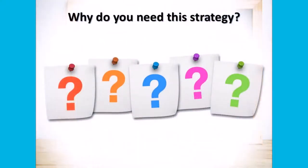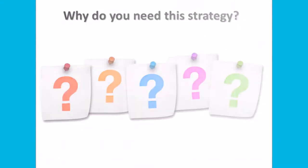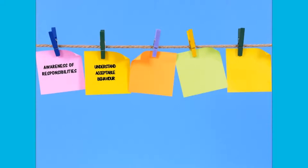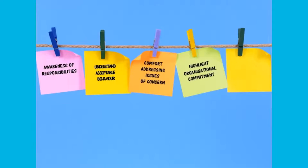So why do you need to have a strategy for communication and support? An effective strategy for communication and support will ensure that all people in your organization are aware of their responsibilities and understand what is acceptable behavior for interacting with children, and will enable people to feel comfortable addressing issues of concern.